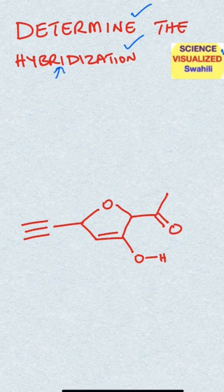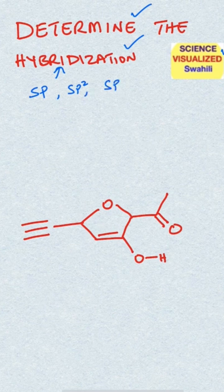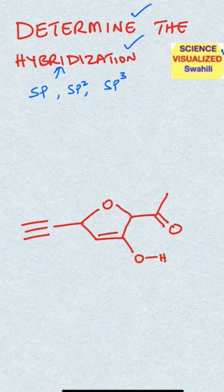basically we're going to be looking at sp, sp2, and sp3 hybridization. This results from the mixing of atomic orbitals.